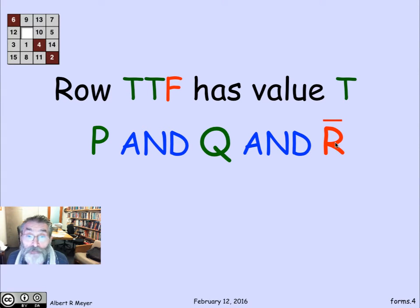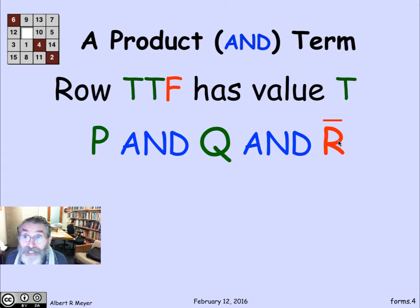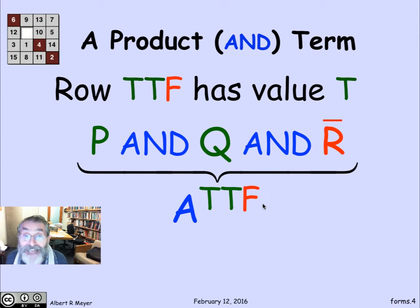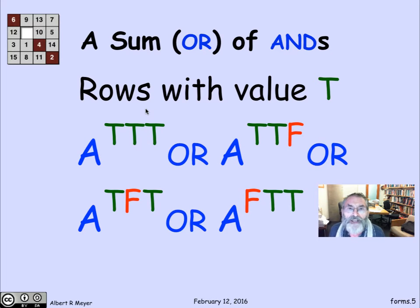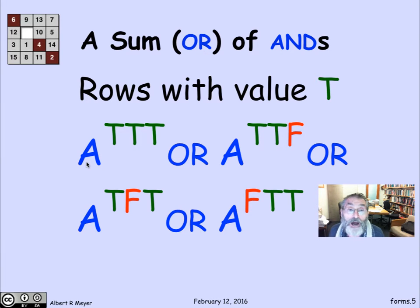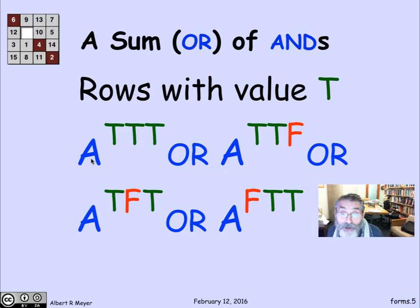In all other rows, this product takes the value 0. So that means that if I simply collect all the product terms from the ones, I will get a sum of products form. Here's this AND term, which we can call the AND of (T, T, F), which means that I'm taking p in green without a complement, and q without a complement, and r with a complement. If I look at the rows of this truth table where the value was true, those are the rows of three T's, T T F, T F T, and F T T. And so I'm going to take an OR of those four AND terms.